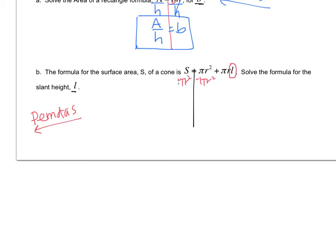Sorry, I know that's hard to read. Hold on, I'll fix it. And so I have S minus pi r squared equals pi r L.